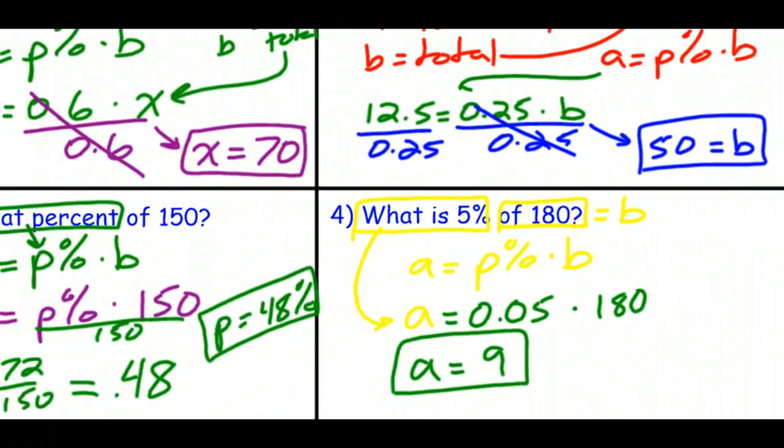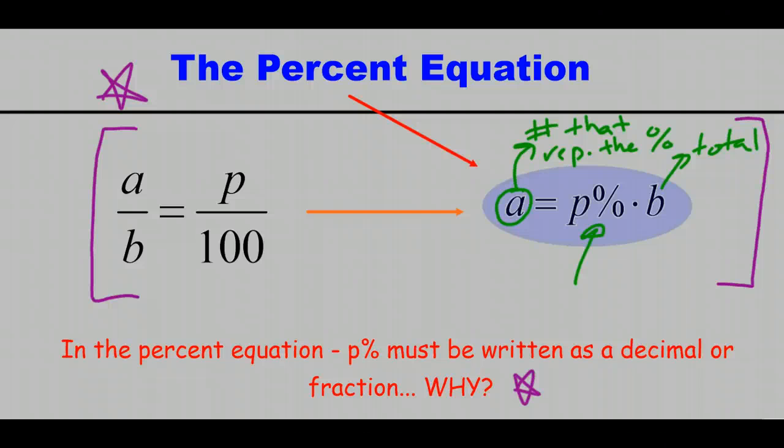As a quick review: if we take the proportion we've been using to solve percent problems and manipulate it a little bit, we turn it into the percent equation: A equals P percent times B, where A is the part — the number representing the percent — and B is the total, the number we are taking the percent of. Very importantly, in the percent equation, P percent must be written as a decimal or a fraction. Part of your homework is to think about and write a few sentences about why that is.